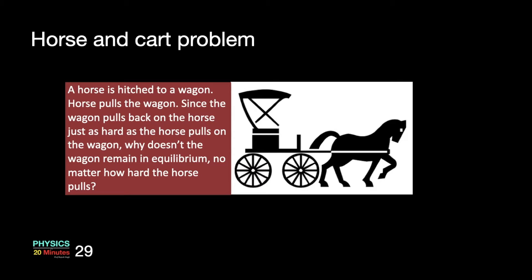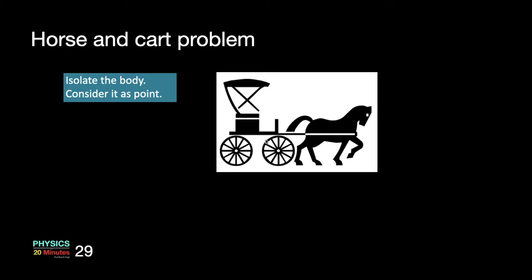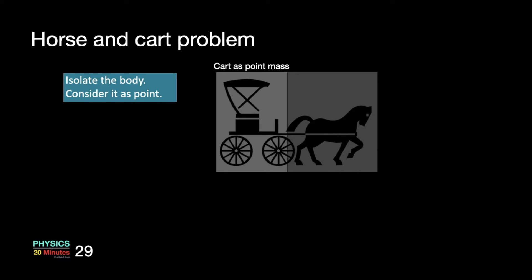A horse is hitched to a wagon; the horse pulls the wagon. Since the wagon pulls back the horse just as hard as the horse pulls on the wagon, why doesn't the wagon remain in equilibrium — that is, if it is at rest it should remain at rest, or if it is moving at constant speed along a straight line it should continue to do so without accelerating. Let's apply our problem solving tactics. Here is the sketch of our system. Our first point was isolate the body and consider it as a point. In this situation there are two bodies: one is the cart and one is the horse. We can isolate them one by one, so we will take the cart first — we ignore the horse for the time being and focus only on the cart, taking it as a point mass.